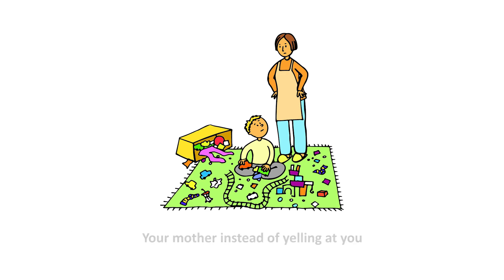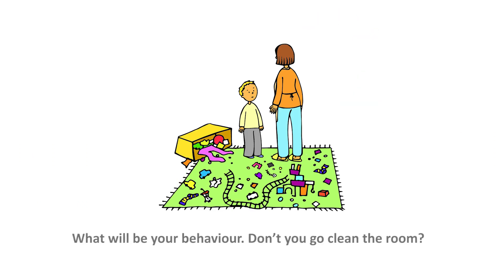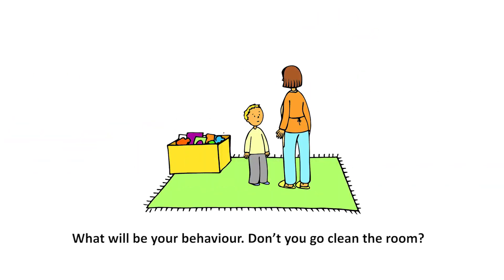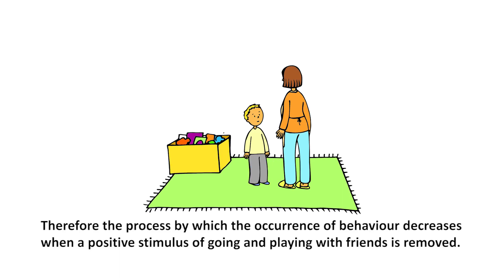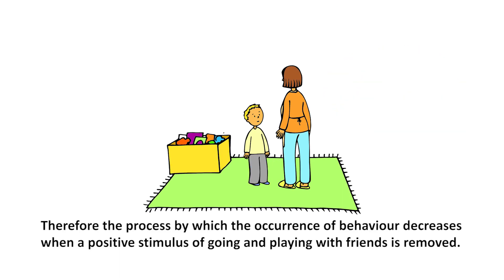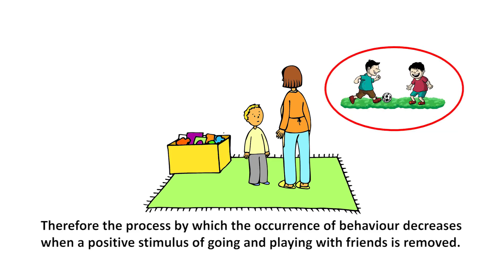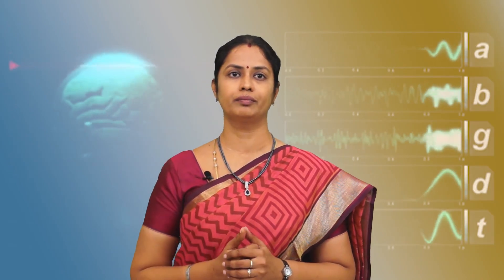Suppose in the same situation of not keeping your room clean, your mother instead of yelling calmly tells you that you will not be allowed to go and play with your friends for two days. What will your behavior be? You go clean the room. The process by which the occurrence of behavior decreases when a positive stimulus — going and playing with friends — is removed is referred to as negative punishment.